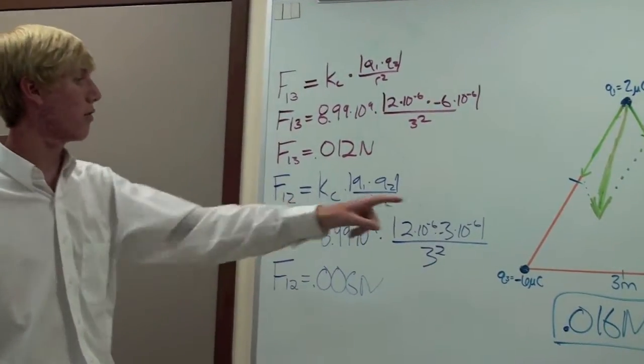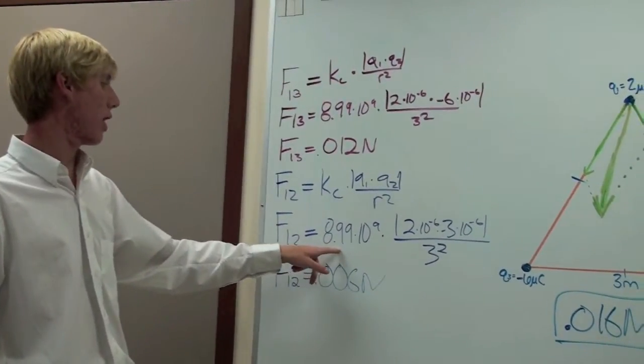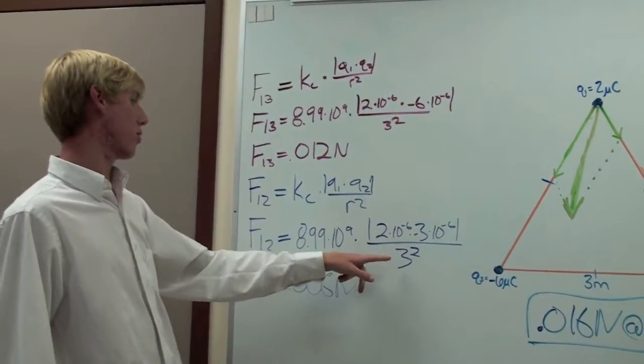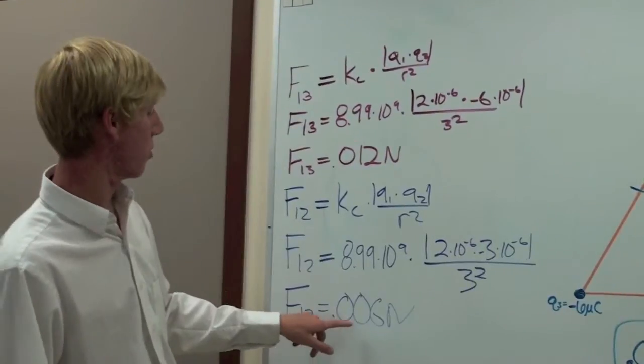And then you do the same thing for Q2 on Q1. So you have 8.99 times 10 to the ninth times these two numbers over 3 squared gives you 0.006 newtons.